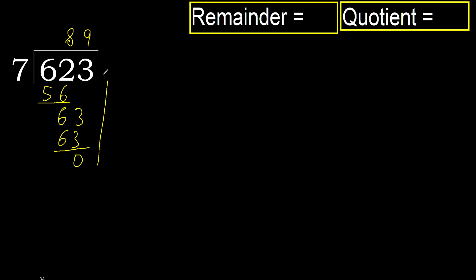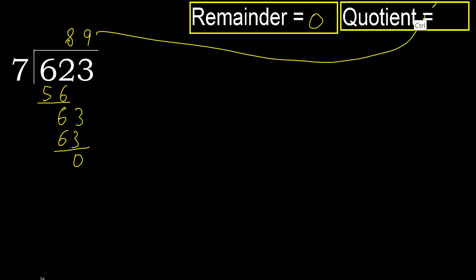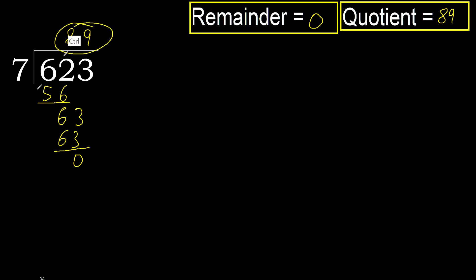Next, there is no number, therefore finish it. 623 divided by 7 is here.